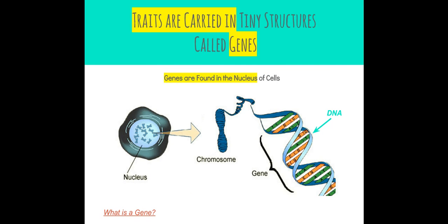These traits are carried in tiny structures called genes, and genes are found in the nucleus of cells. We talked about how eukaryotic cells have a nucleus, so we're really focusing on how traits are carried in eukaryotic cells.